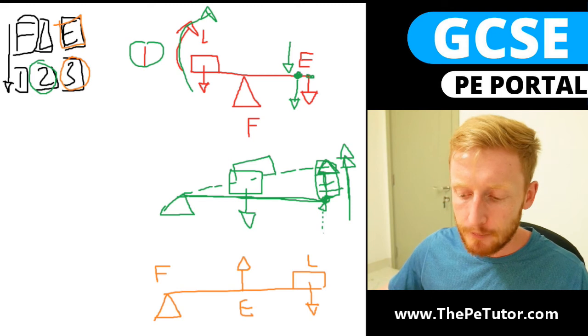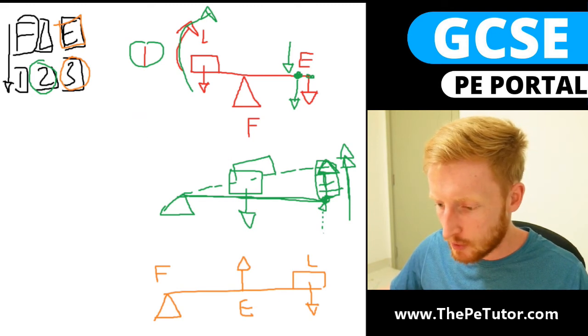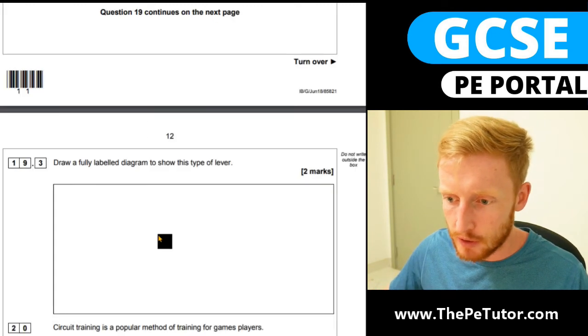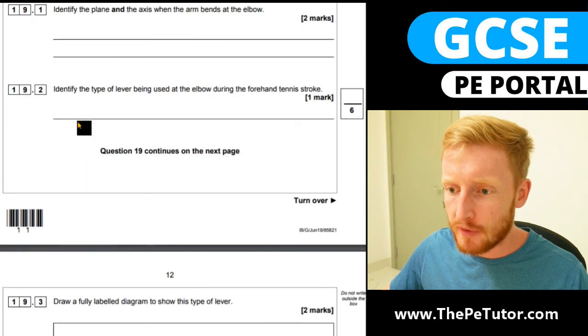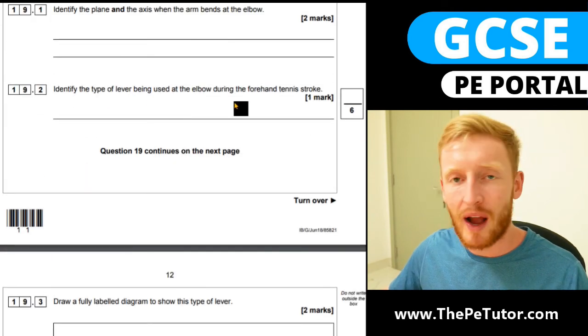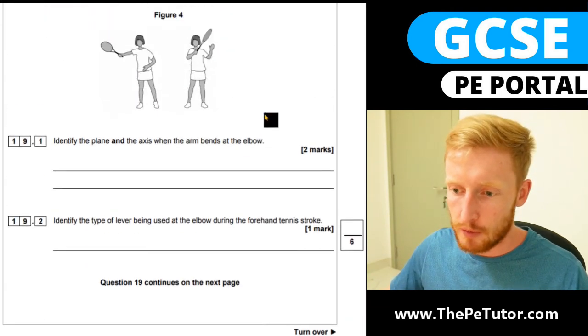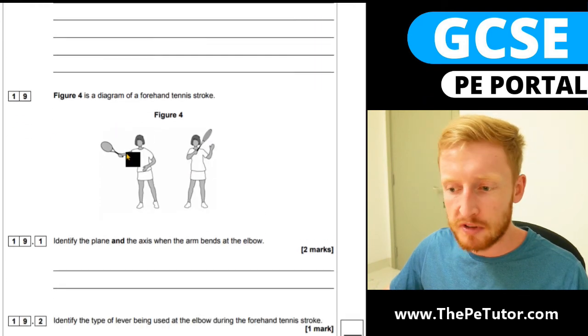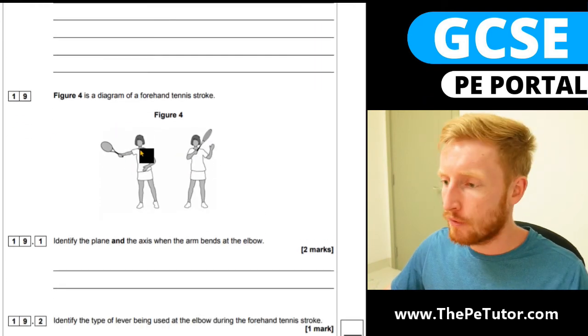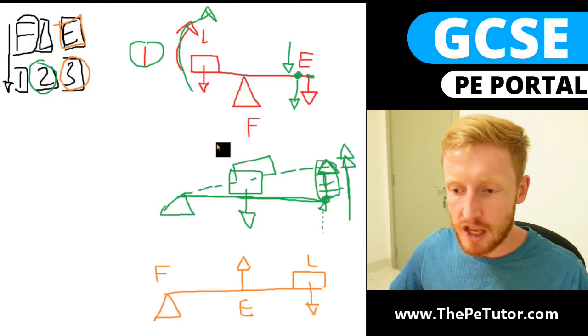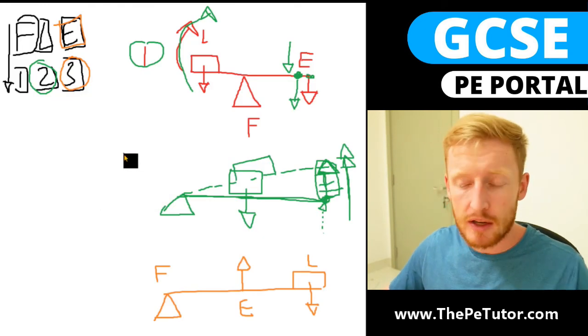So if we quickly go back to the question itself, identify the type of lever being used at the elbow during the forehand tennis stroke. So from position A through to position B we're talking about elbow flexion. So if we come back now and think about what an elbow does in order to flex or to decrease that angle...